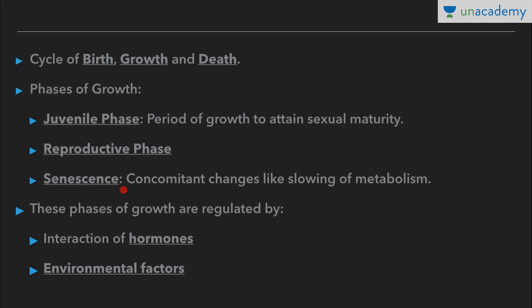The last phase of growth is senescence, which involves concomitant changes like slowing of metabolism. In senescence, body and organ functions deteriorate, metabolism slows, and we can see effects such as loss of vision, loss of hearing, and so on. It eventually leads to the death of the organism.